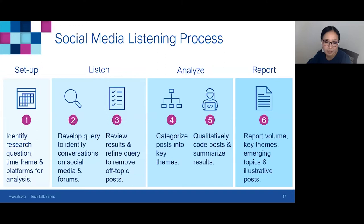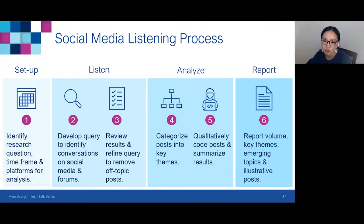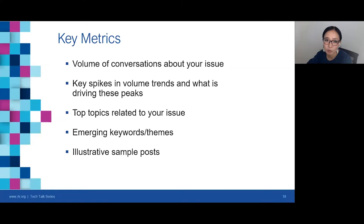Then we examine results and analyze the conversation. Analysis can take many forms, but at a minimum we categorize posts into emergent themes, either qualitatively or using computational methods, and complement this with qualitative review and coding to understand the context and nature of the themes. We then report out key metrics and findings, which may include the volume of conversations, key spikes in volume trends and what's driving them, top topics and emerging keywords and themes, and illustrative sample posts related to those themes.